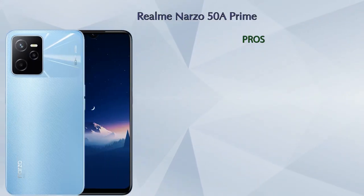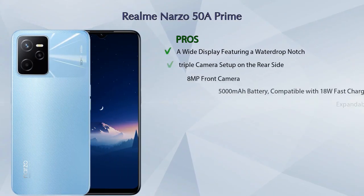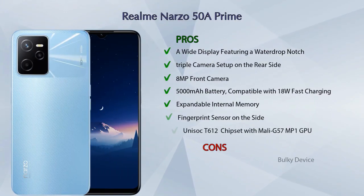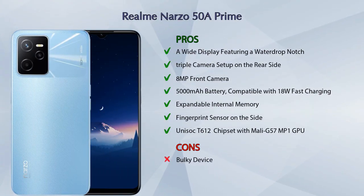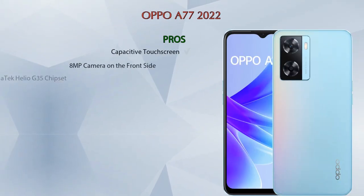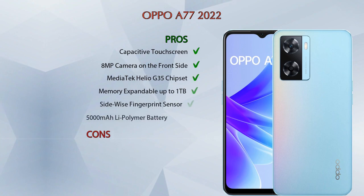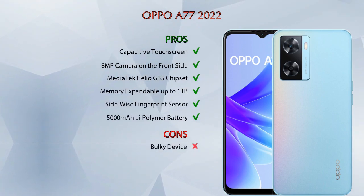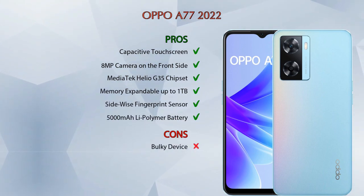Now let's talk about pros and cons. The Realme Narzo 50A Prime has seven pros and one con, and the OPPO A77 2022 has six pros and one con.